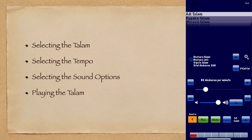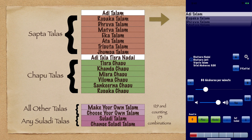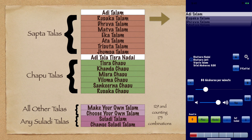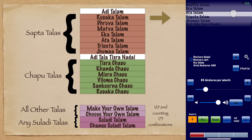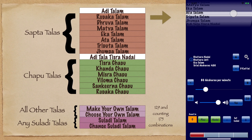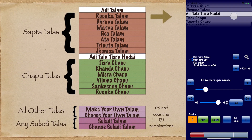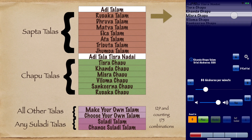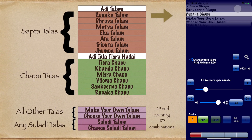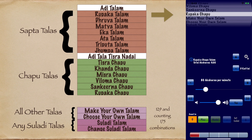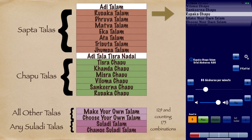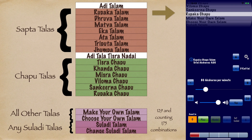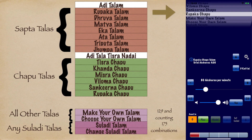The first thing you would want to do is select the Thalam. Thalanome offers 310 different Thalas and counting. The picker wheel at the top lays out the most common Thalas for easy access — Adi Thalam, followed by the Sapta Thalas of the Alankara lessons, then Adi Thalam Thisra Nadai, followed by the Chaputalas. You can also pick any Thalam, Jaadi and Nadai combination from the Suladi Thalas for a total of 175 combinations.